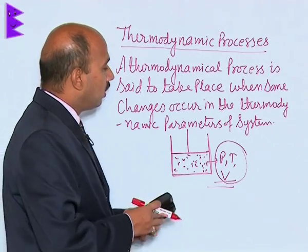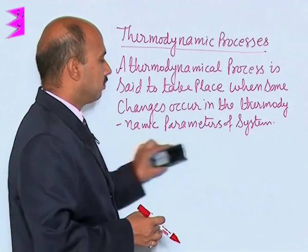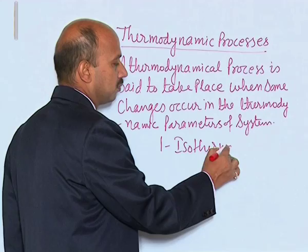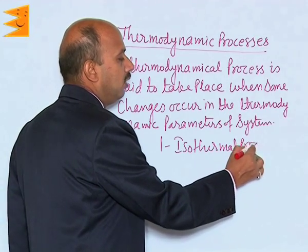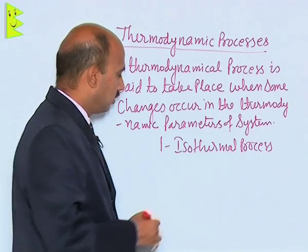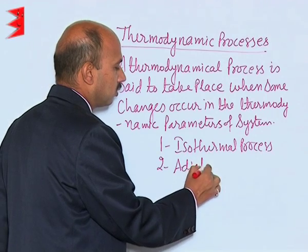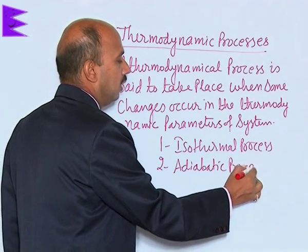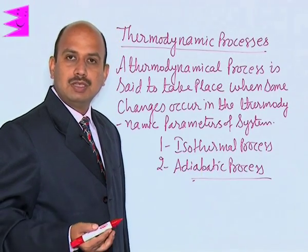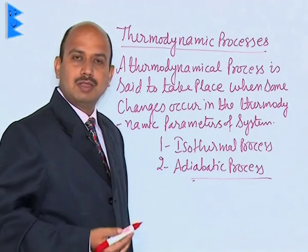There are basically four types of thermodynamical processes. The first one is isothermal — in an isothermal process, temperature remains constant while pressure and volume change. The second one is the adiabatic process — in this case, pressure, volume, and temperature all three change, and there is an exchange of heat between the system and the surroundings.